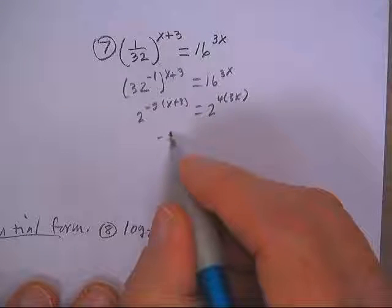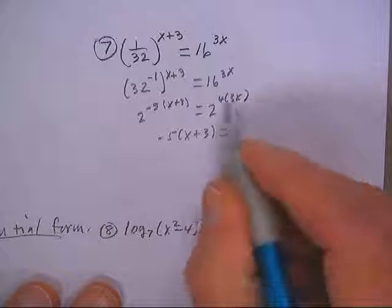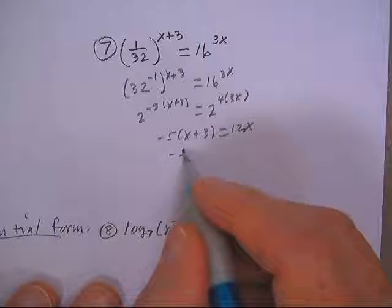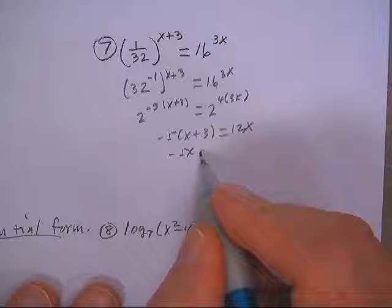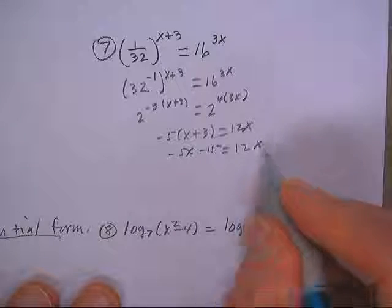So I'm going to get negative 5 times x plus 3 equals 4 times 3, 12x. Negative 5x minus 15 equals 12x.